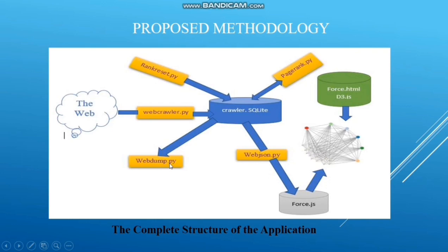The webdump.py is also a Python code. It shows the pages that have at least one incoming link. When we run this code, it shows the number of incoming links, the old page rank, the new page rank, the ID of the page, and the URL of the page.